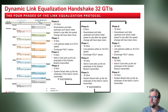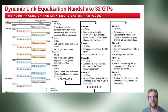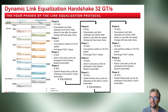We'll go through the four phases of equalization: phase 0, the 2.5, 8GB, 16GB, up to 32GB, and later on we also now have available 64GB, which is under development, for PCI Express Gen 6.